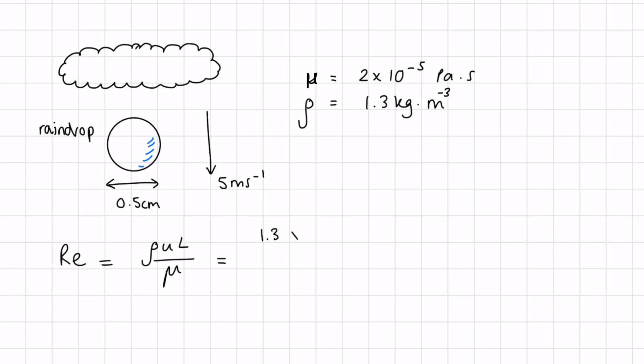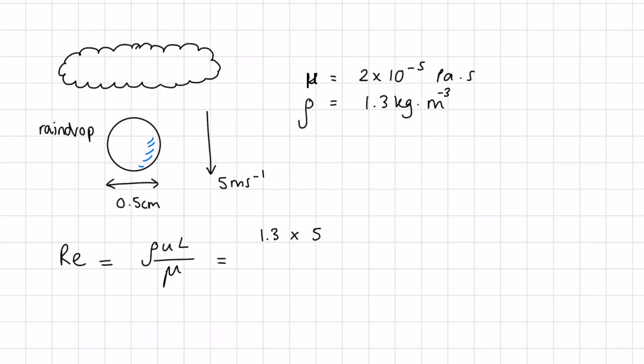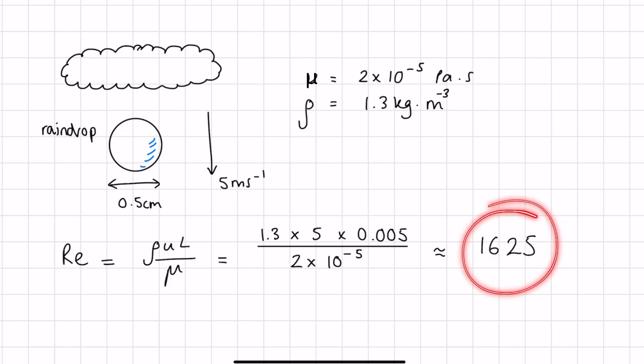With all of this information we can calculate the Reynolds number. The expression is simply 1.3 times 5 times 0.005 — noting that we've converted centimeters into meters — all divided by 2 times 10 to the power minus 5. This gives us a Reynolds number of 1625.